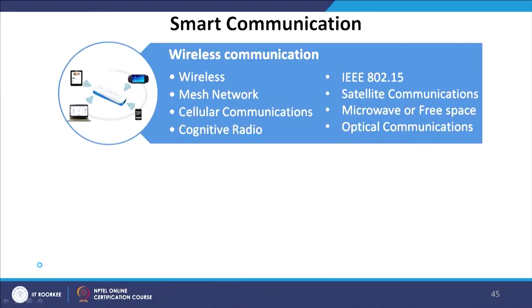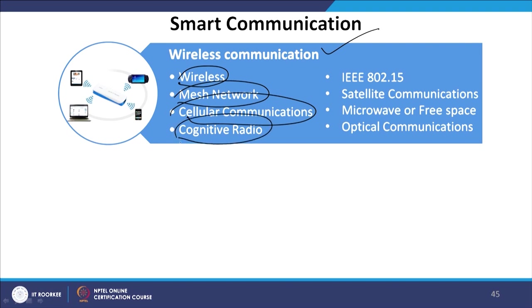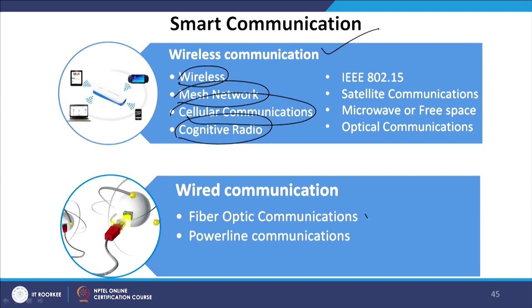One of the major forms of smart communication is wireless communication, including wireless mesh networks, cellular communications, and cognitive radio. All this wireless communication is quite important for the successful operation of a smart grid. For wired communication, there is either fiber optic communication or power line communication.